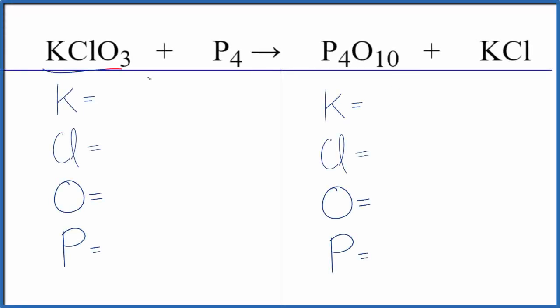Let's balance the equation for KClO3 plus P4. This is potassium chlorate and this is tetraphosphorus. So to balance the equation let's just count the atoms up first. One potassium and one chlorine and then three oxygens, four phosphorus atoms.